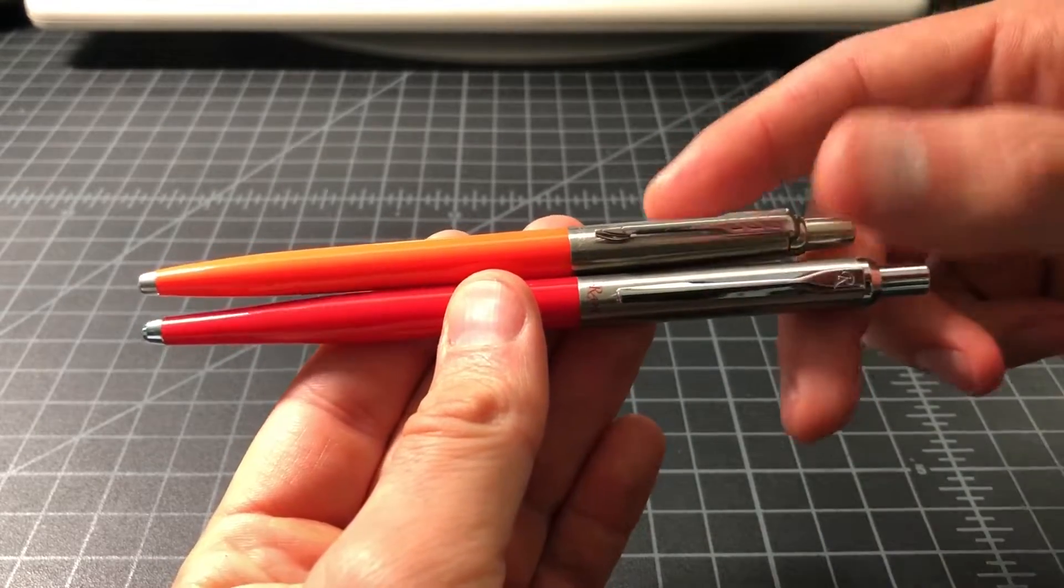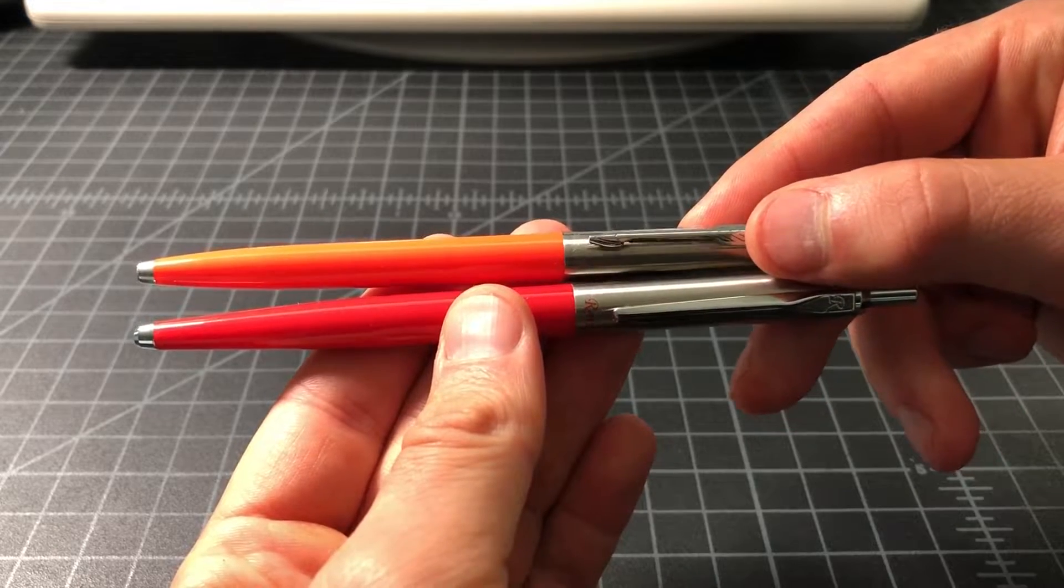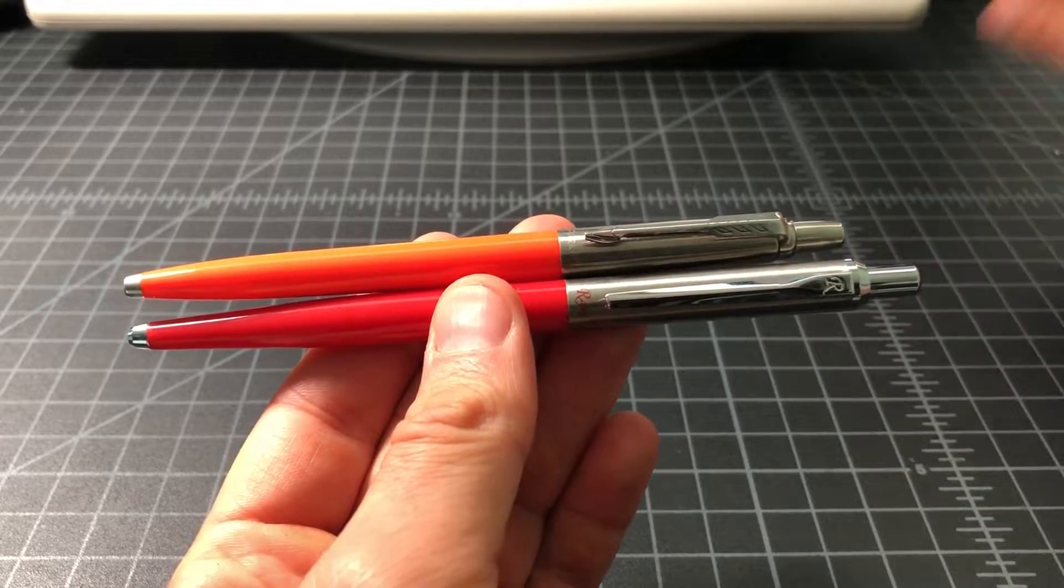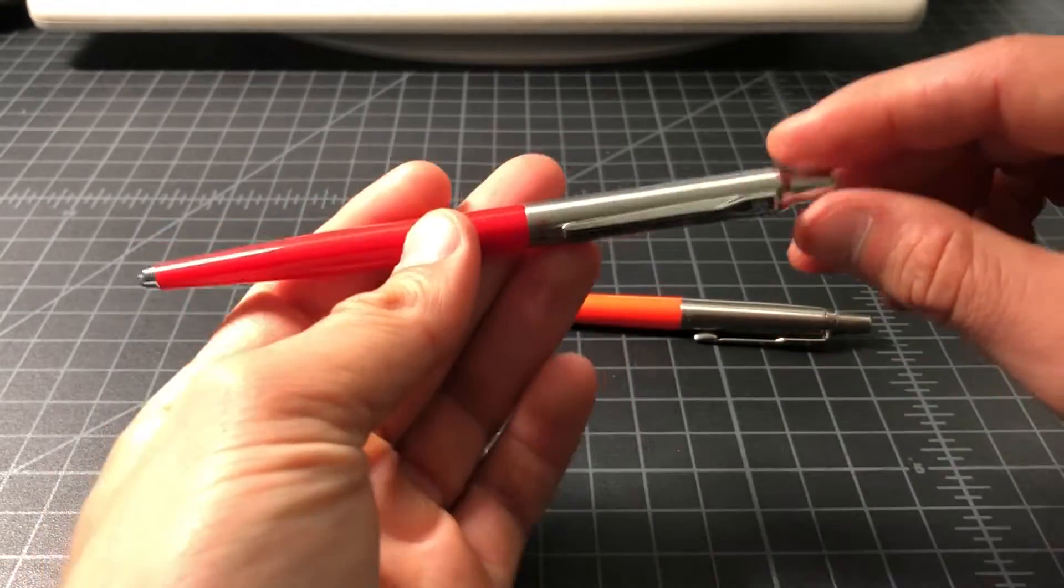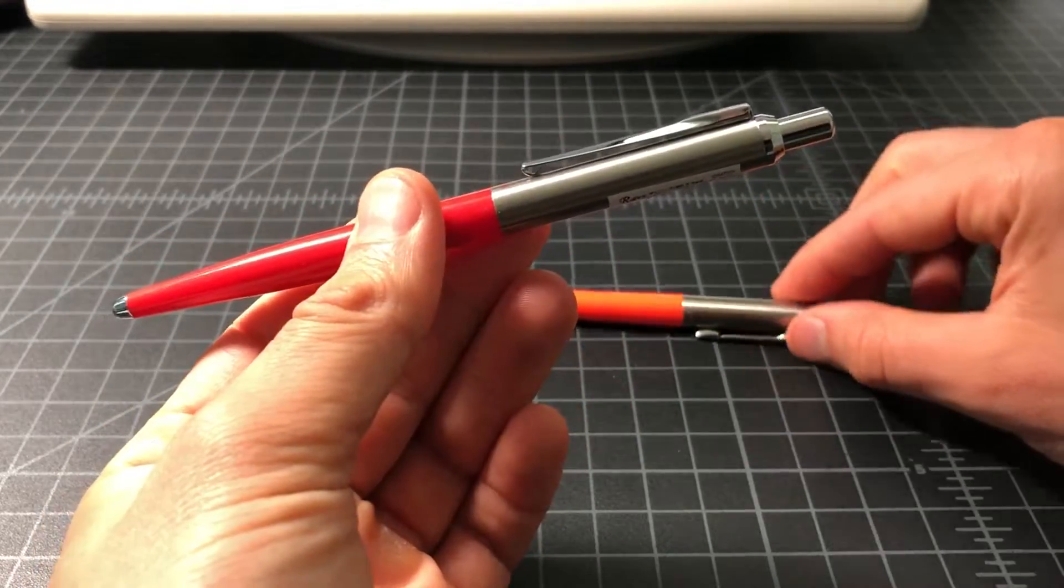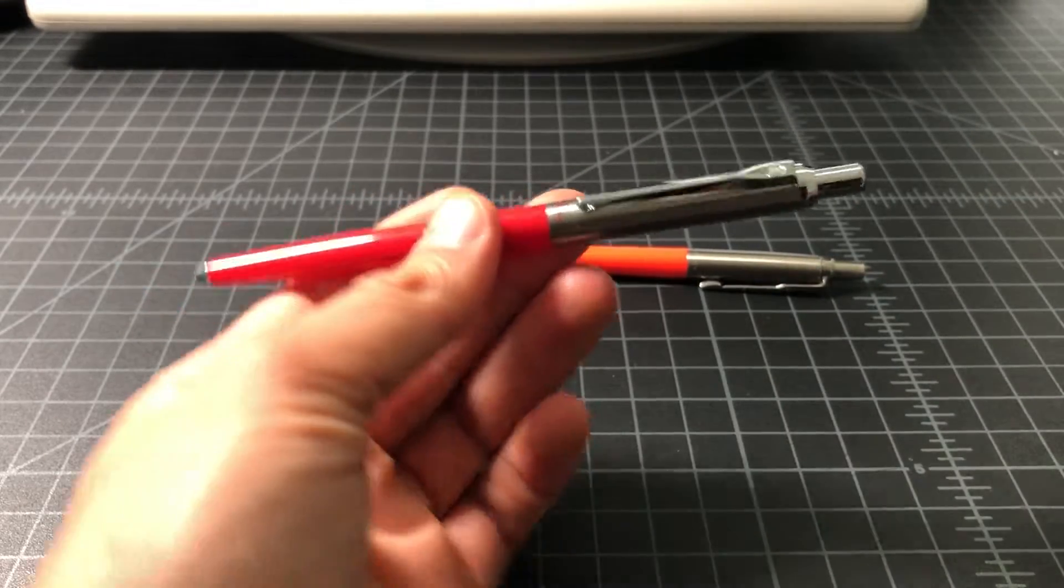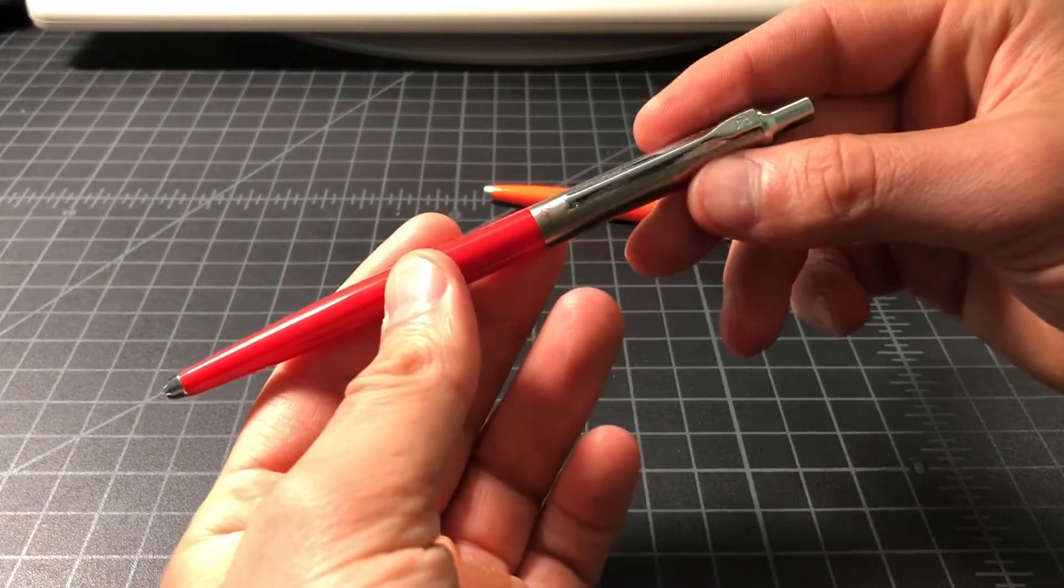That said, I think Ohto has shown in the past they make some pretty okay pens, so I was happy to take a flyer on it. This pen goes for three dollars and ninety cents, call it four dollars. It's actually cheaper than the jotter.